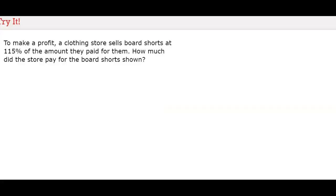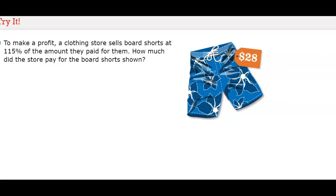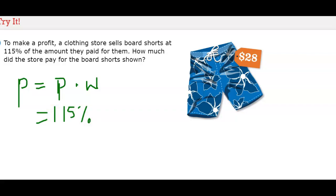Now try it: to make a profit, a clothing store sells board shorts at 115% of the amount they paid for them. How much should the store pay for the board shorts shown? The shorts are $28. We write the percent equation: part equals percent times whole, so the percent is 115%.